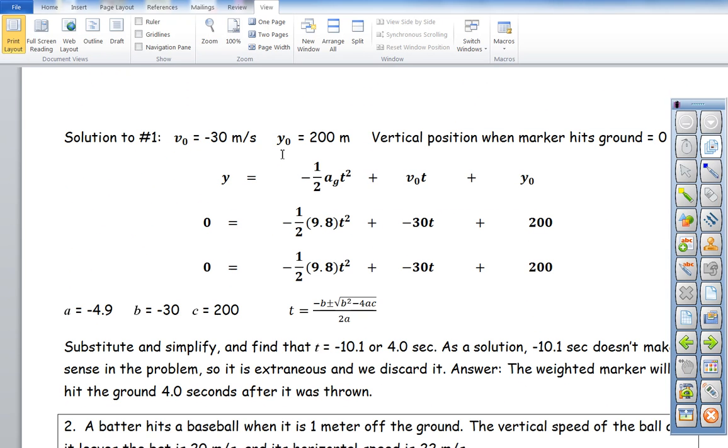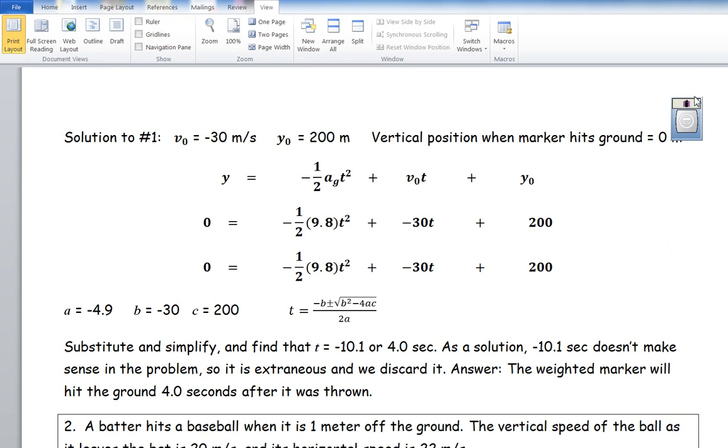Here you can see the solution. We're given these initial values, you plug them into the equation including the 9.8 for acceleration due to gravity, and then what I did skip here was probably this section.